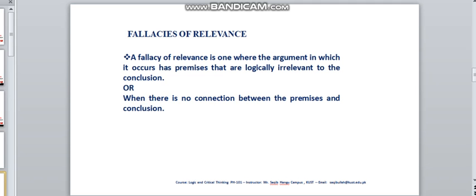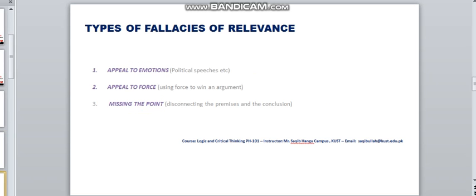A Fallacy of Relevance is one where the argument in which it occurs has premises that are logically irrelevant to the conclusion. Or we may say that when there is no connection between the premises and the conclusion, then Fallacy of Relevance occurs. In Fallacies of Relevance, there are several further types, like Appeal to Emotions, Appeal to Force, and Missing the Point.